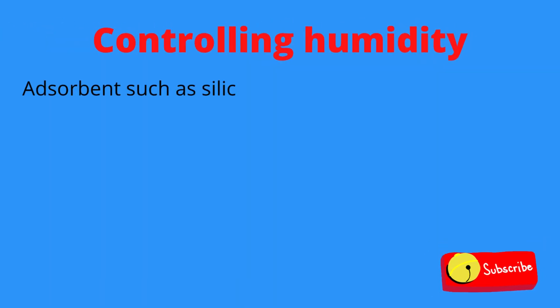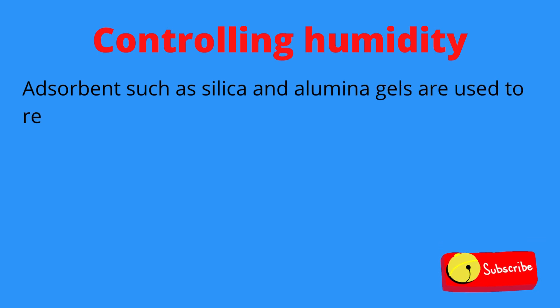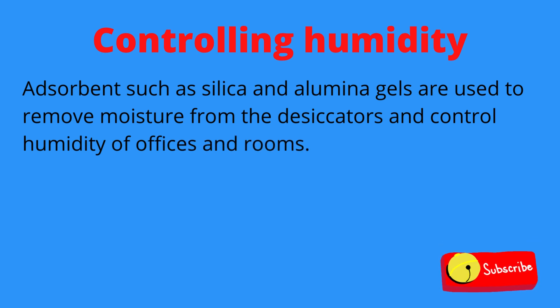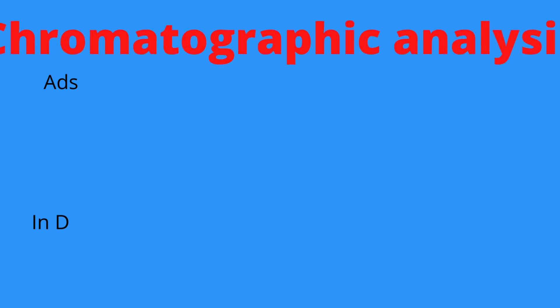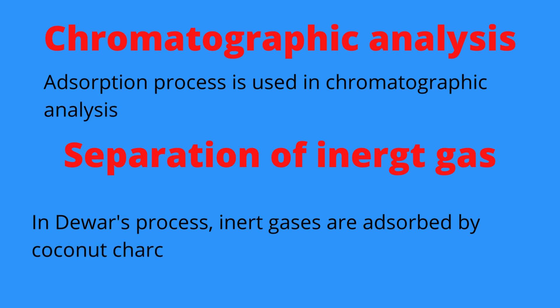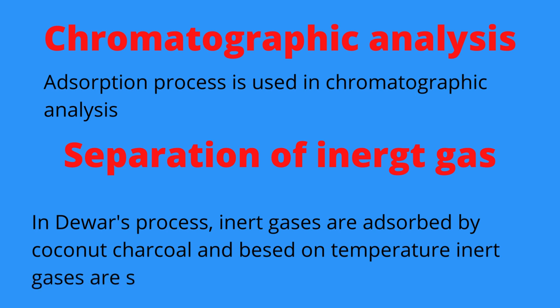Then, controlling humidity. Adsorbents such as silica and alumina gels are used to remove moisture from desiccators and control humidity in offices and rooms. Then, chromatographic analysis. The adsorption process is used in chromatographic analysis for analyzing certain samples. Then, separation of inert gases. Using Dewar's process, inert gases are absorbed by coconut charcoal and, based on temperature, the inert gases are separated.